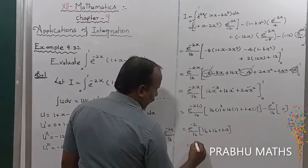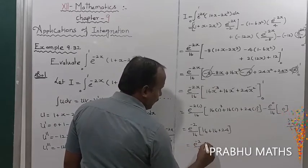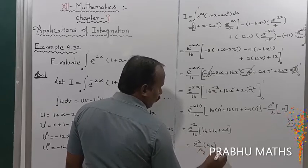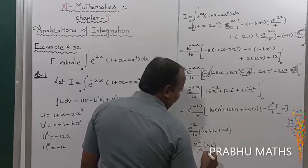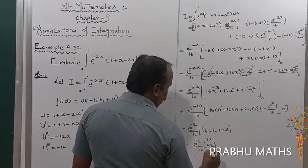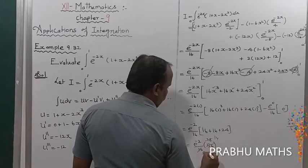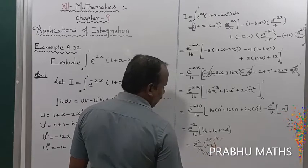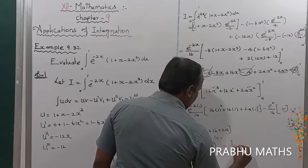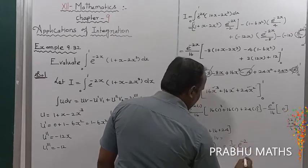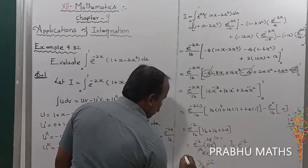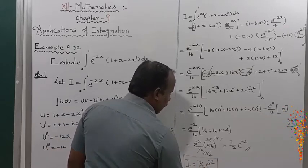So c equals e^(-2)/16 into 56. Simplifying: 56/16 = 7/2. Therefore I = (7/2) · e^(-2). That is the solution.